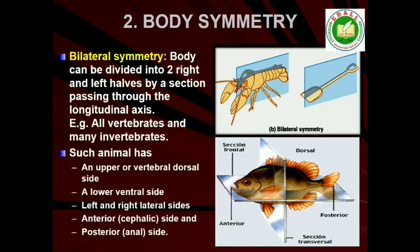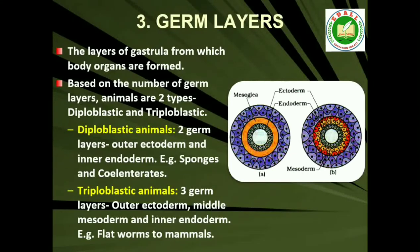3. Diploblastic and Triploblastic Organization. Animals in which the cells are arranged in two embryonic layers, an external ectoderm and an internal endoderm, are called diploblastic animals, for example, coelenterates. An undifferentiated layer, mesoglea, is present in between the ectoderm and the endoderm.